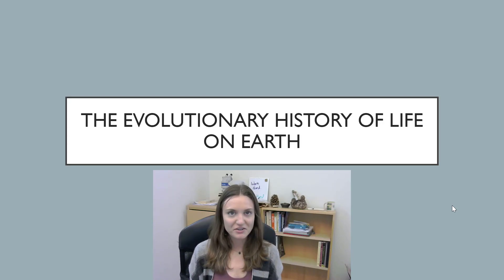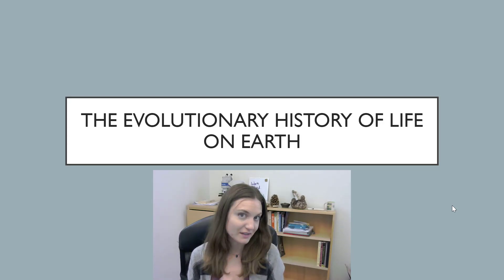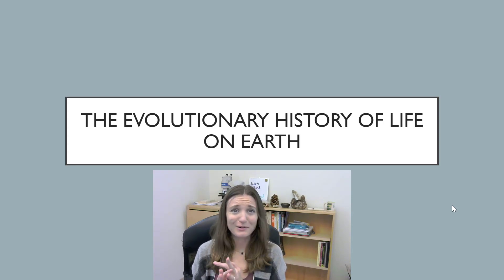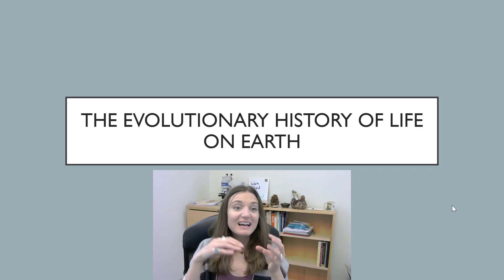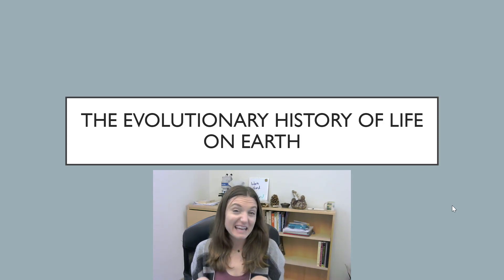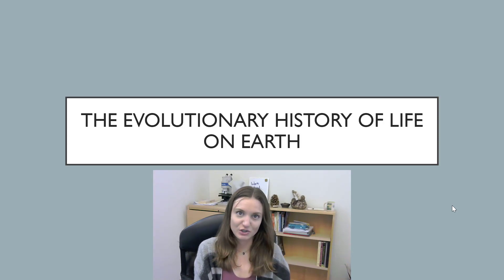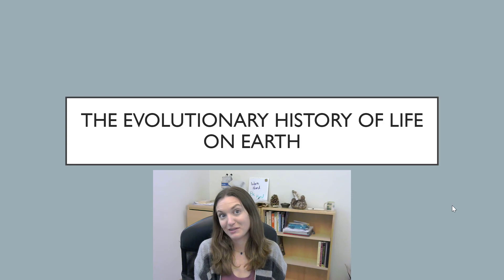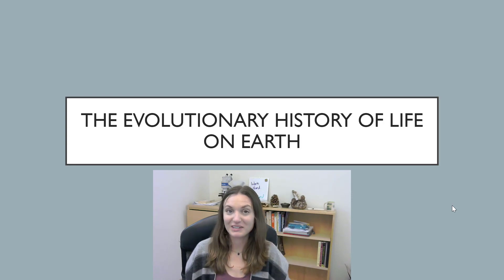Now that we've laid the foundation of how the first life forms came about — putting together those organic monomers and the organic polymers and encasing that in a protocell — now we can start to talk about some of the evolutionary history of life on Earth, especially some of the early evolutionary history. How did some of these first prokaryotic organisms come about? That's what we're going to tackle today.